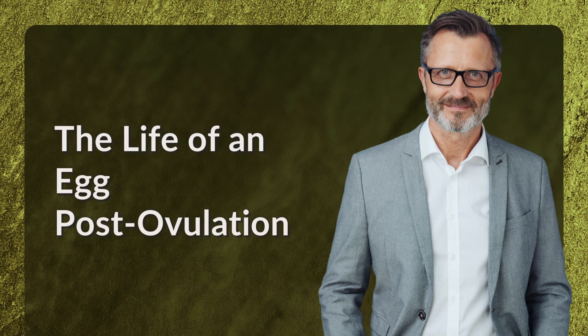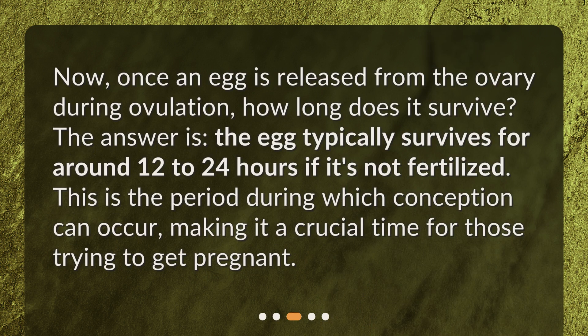The life of an egg post-ovulation. Once an egg is released from the ovary during ovulation, how long does it survive? The answer is, the egg typically survives for around 12 to 24 hours if it's not fertilized. This is the period during which conception can occur, making it a crucial time for those trying to get pregnant.